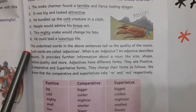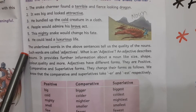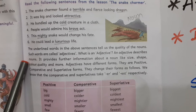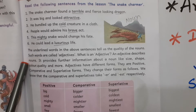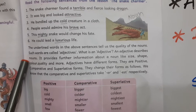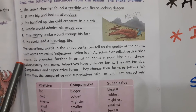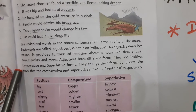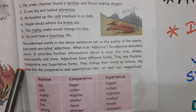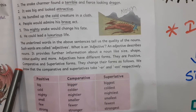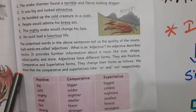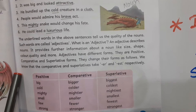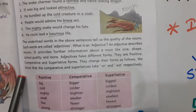What is an adjective? An adjective describes about nouns. It provides further information about a noun like size, shape, color, quality and more. Adjectives have different forms. They are positive, comparative, and superlative. They change their forms as follows.